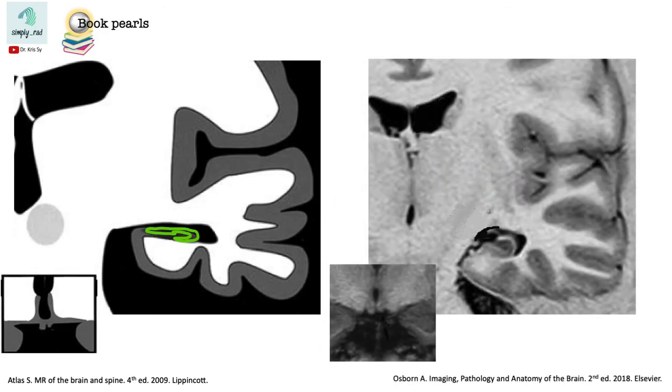In the brain, if we have volume loss in one portion, we will see an increase in volume in the adjacent structures because the overall intracranial volume should remain the same. These secondary findings are clues we should look out for.